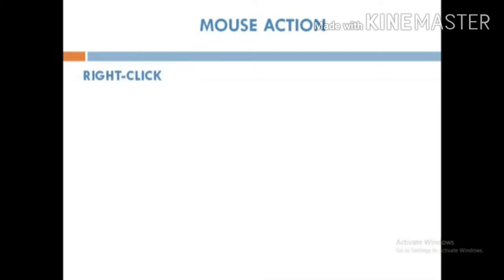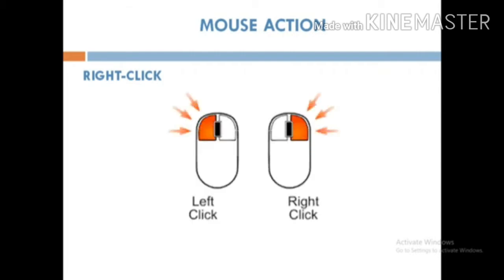Our next option is right click. Pressing and releasing the right mouse button will show a list of options on the monitor. Whenever we press the right mouse button, we get a list — a list of commands is displayed on the monitor.